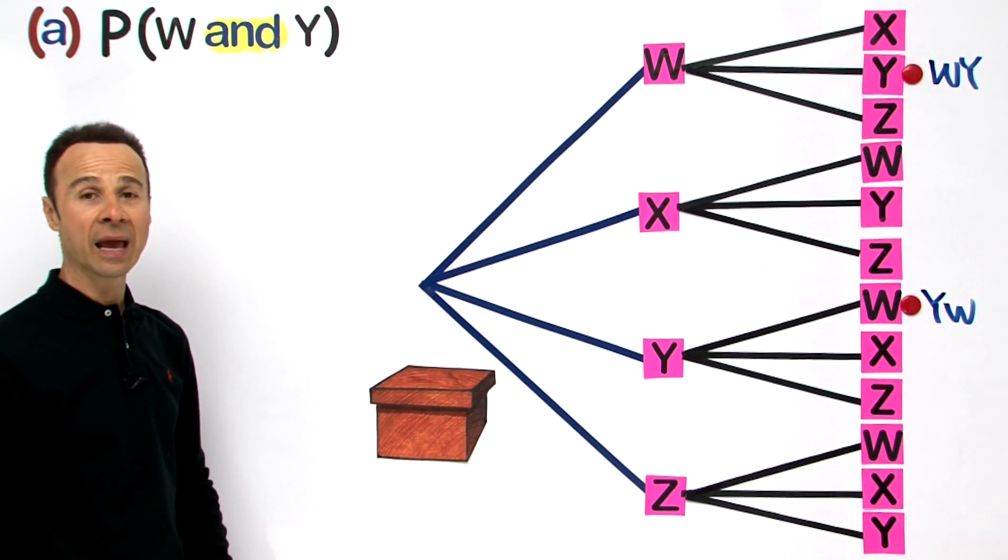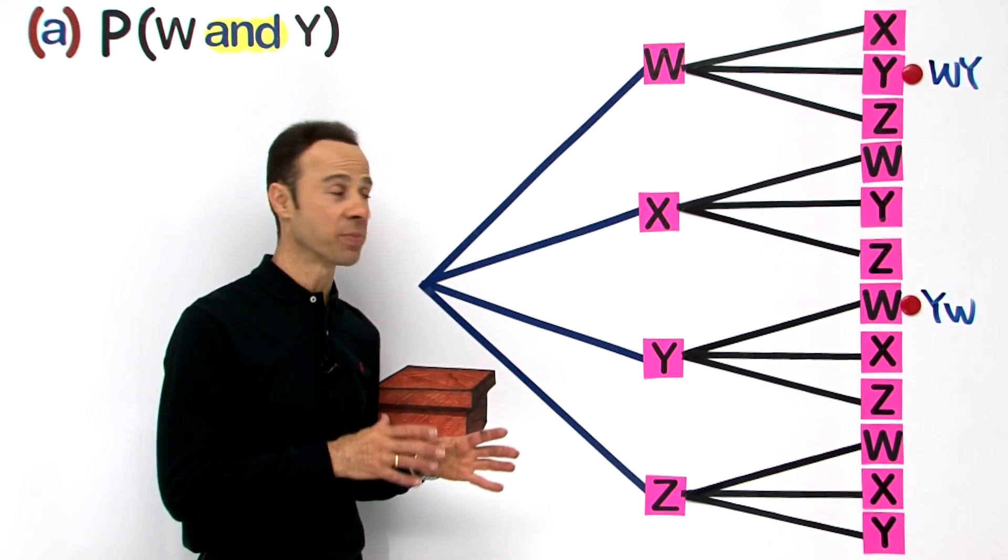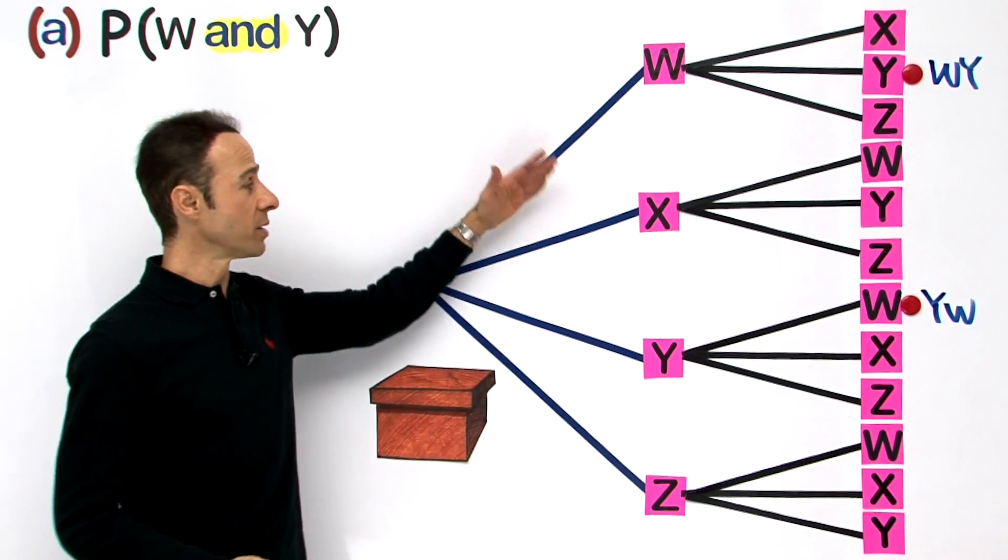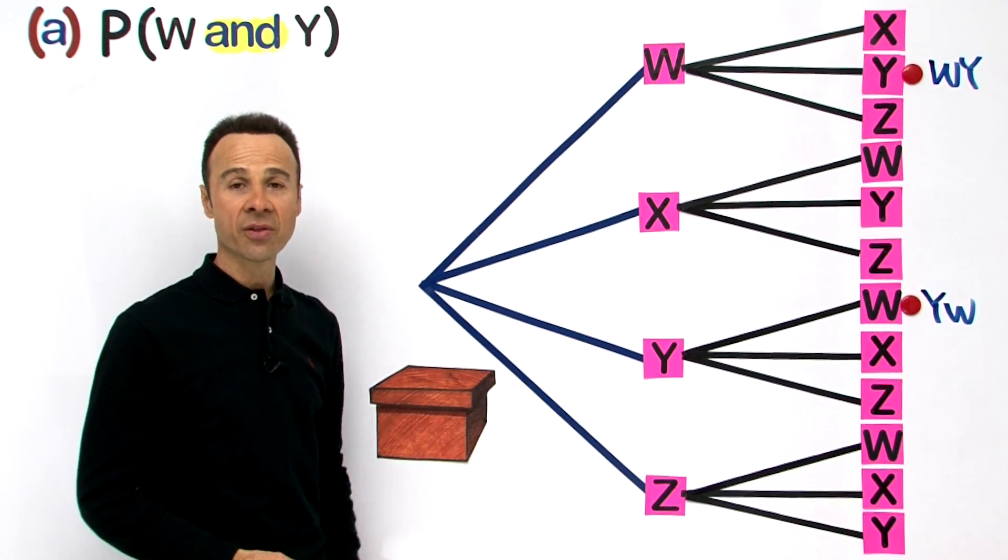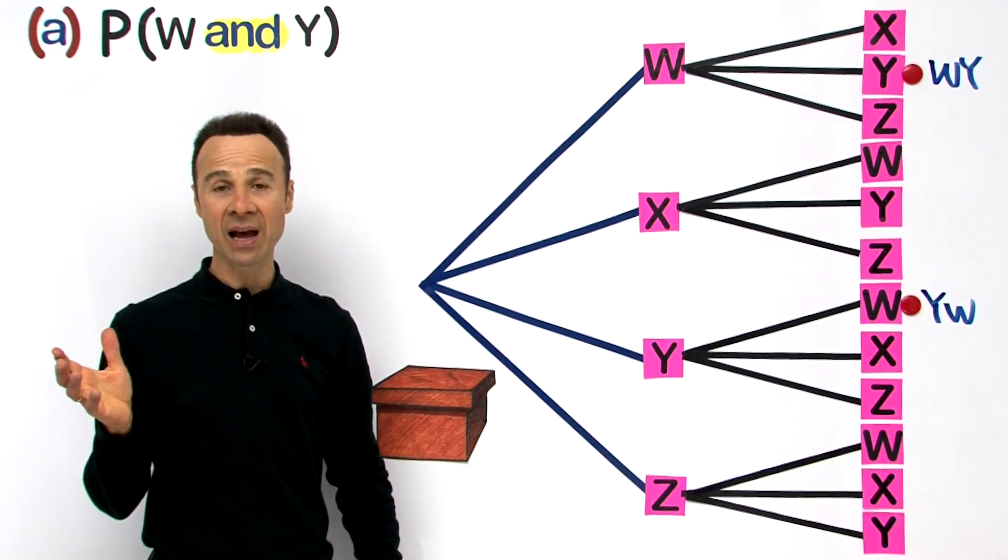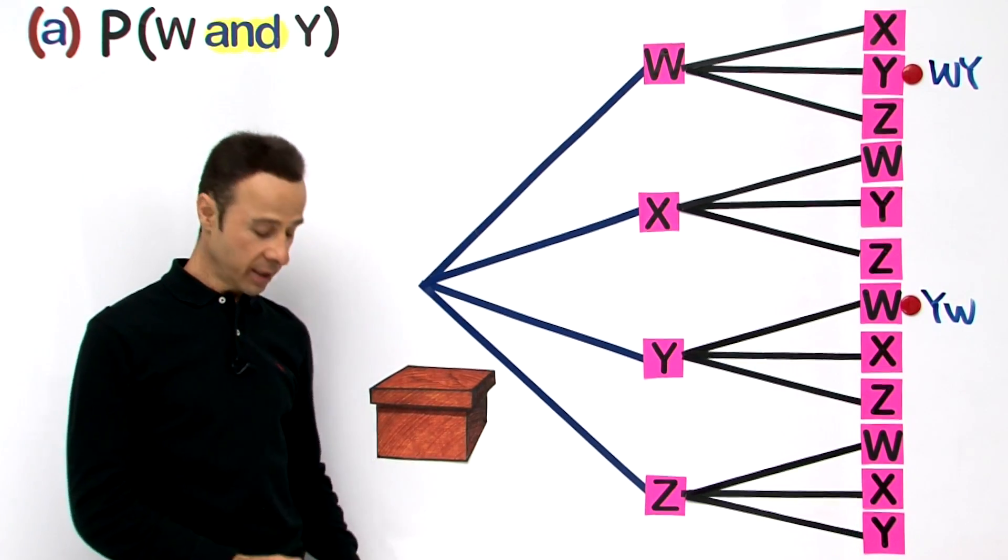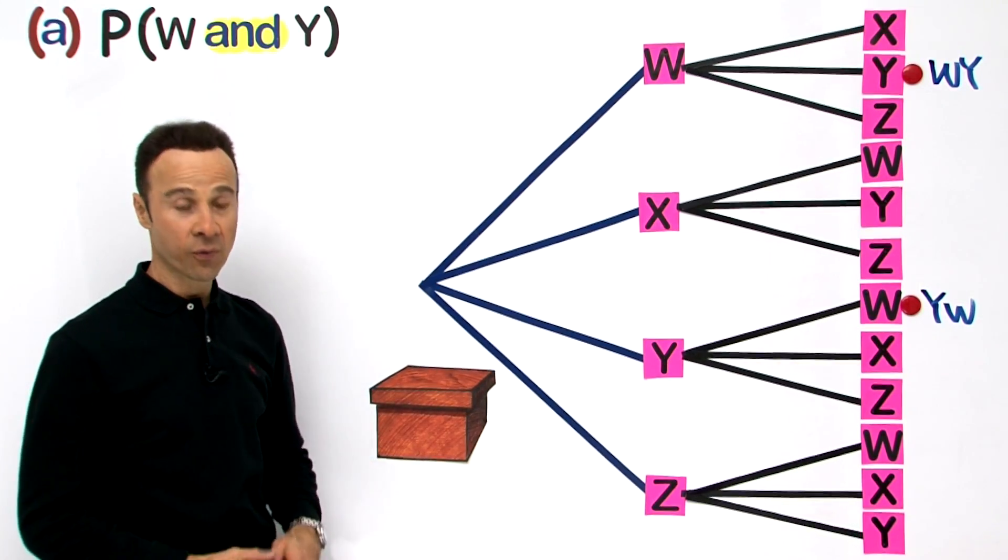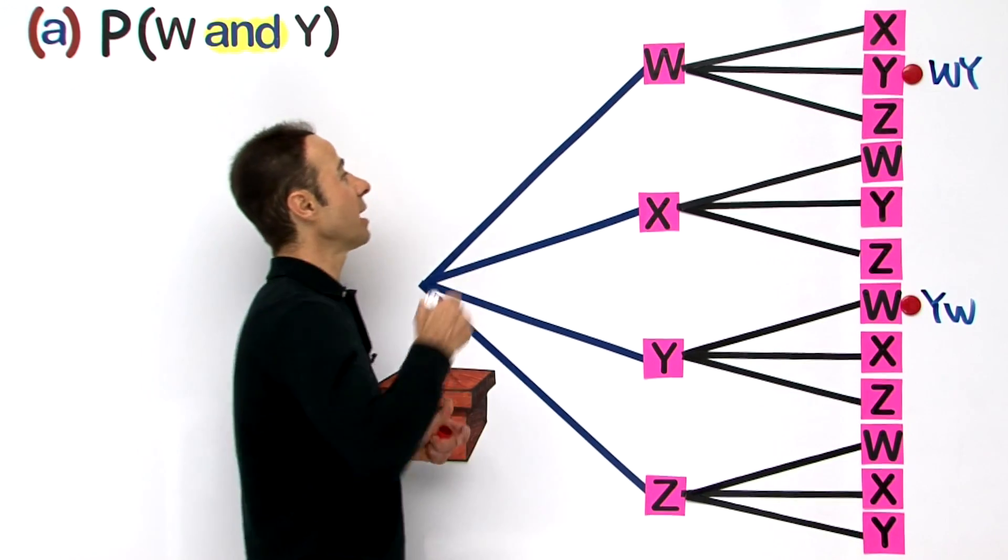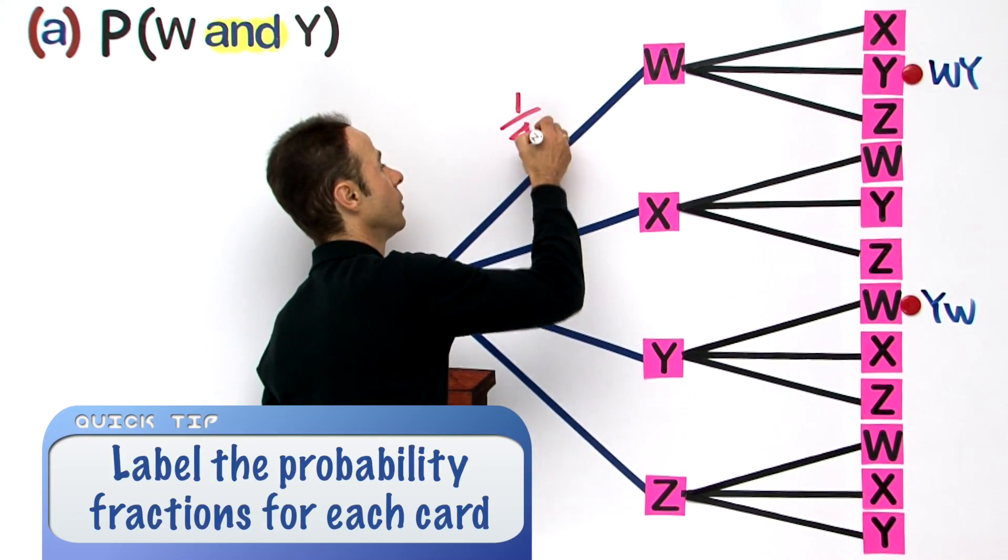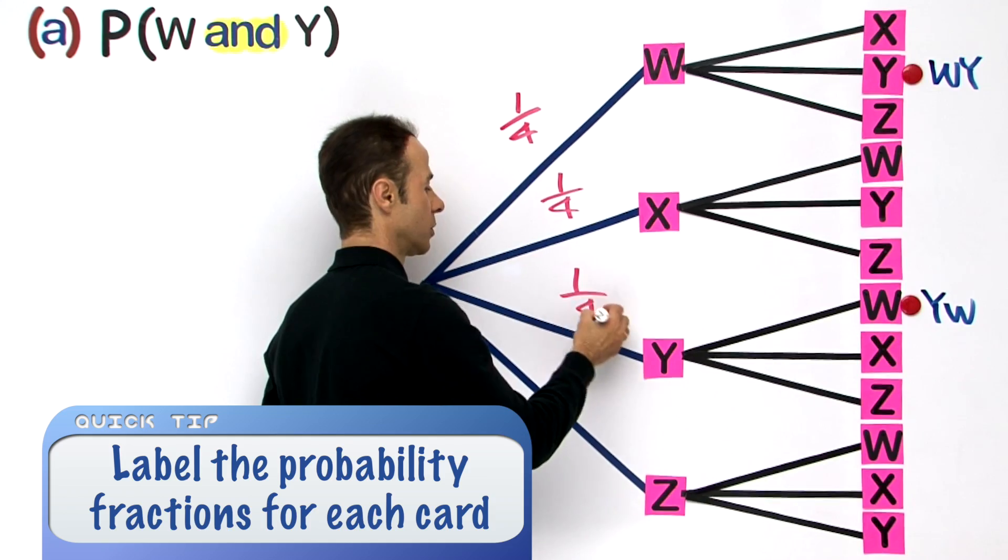Now let us label all the relative fractions of each probability. Since we have 1, 2, 3, 4 cards, the chance of picking any one of those cards at the first event is what? It is 1 chance out of 4, isn't it? So let us write that up: 1 out of 4, 1 out of 4, 1 out of 4.